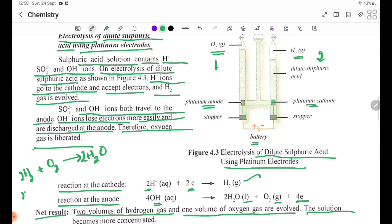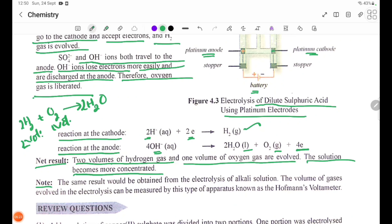Note that the same result would be obtained from the electrolysis of alkali solution. The volume of gases evolved in the electrolysis can be measured by this type of apparatus known as the Hoffmann's voltameter.